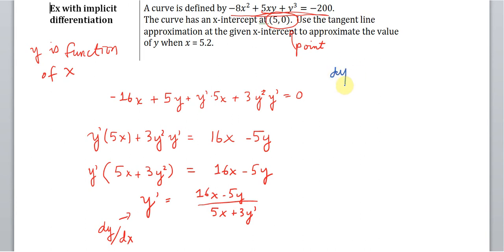So dy/dx at (5,0) is equal to, we're going to plug in 5 for x and 0 for y. I realize that this is an error here. This should be a square, that should be y², not y'.